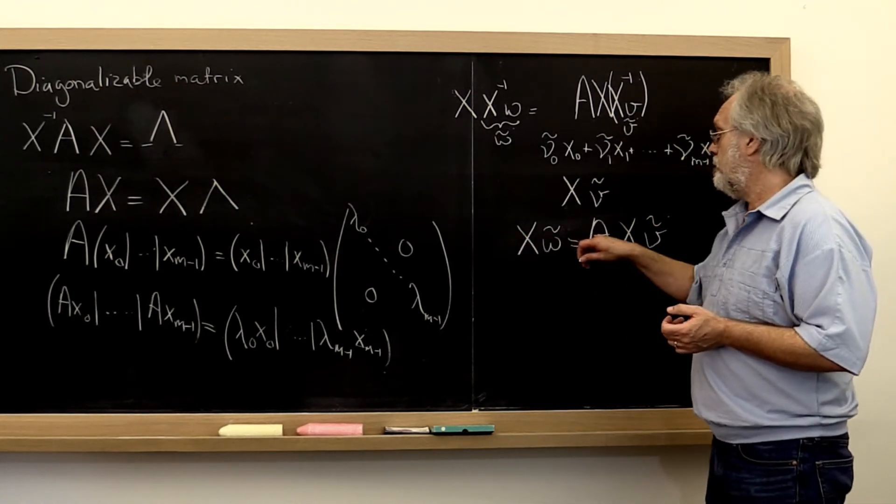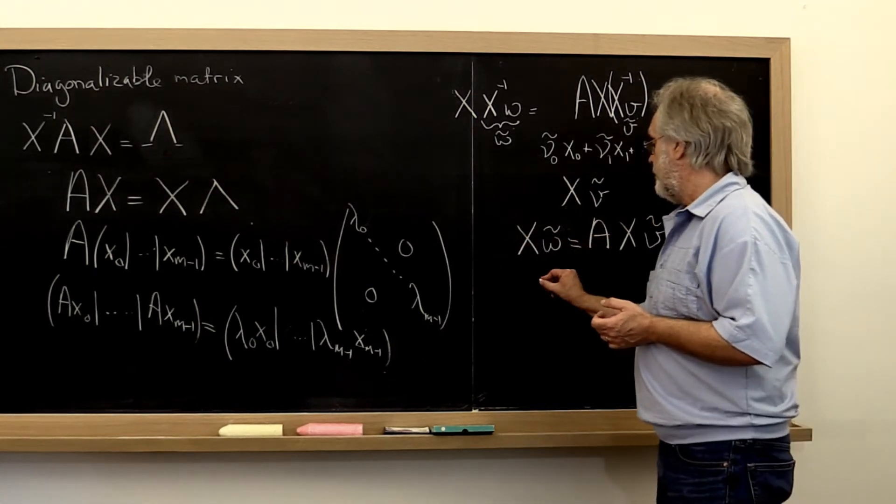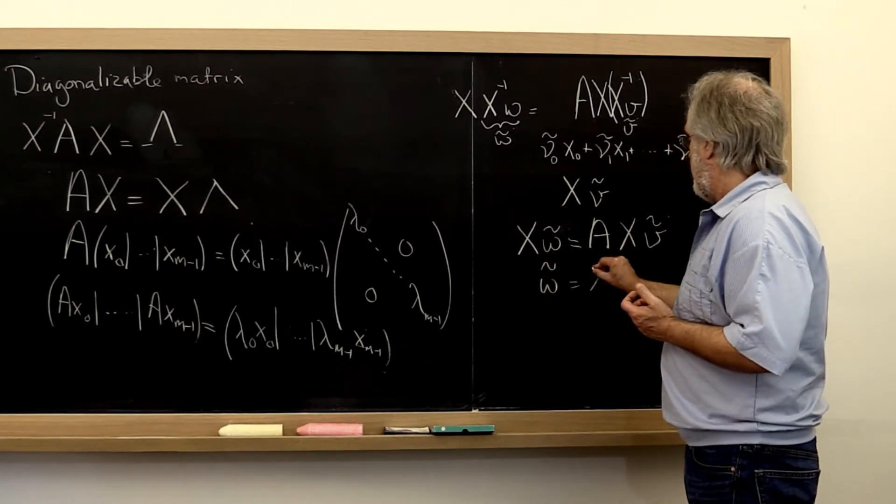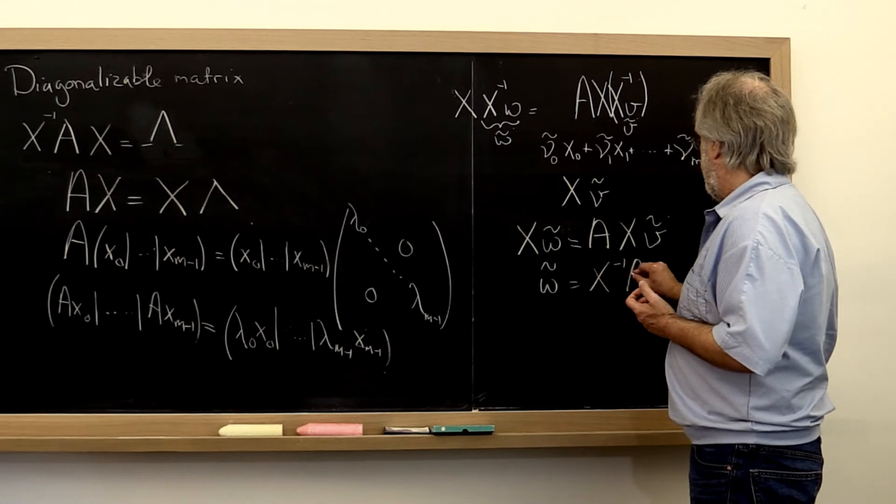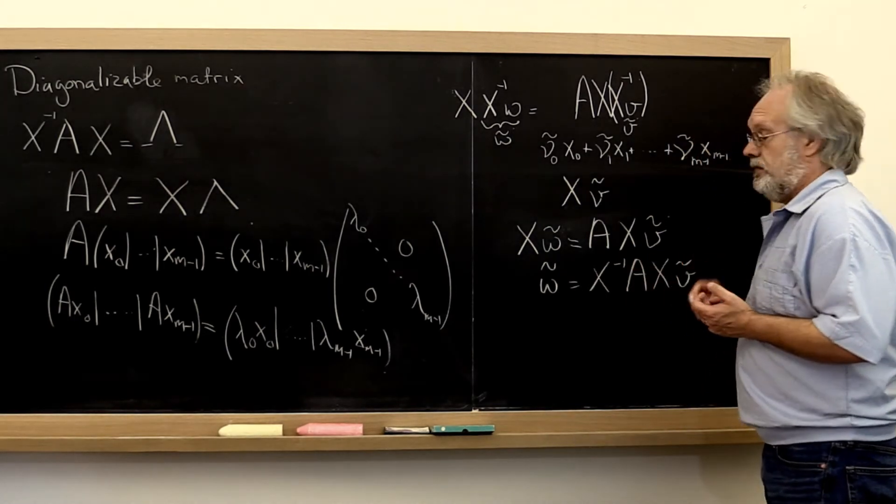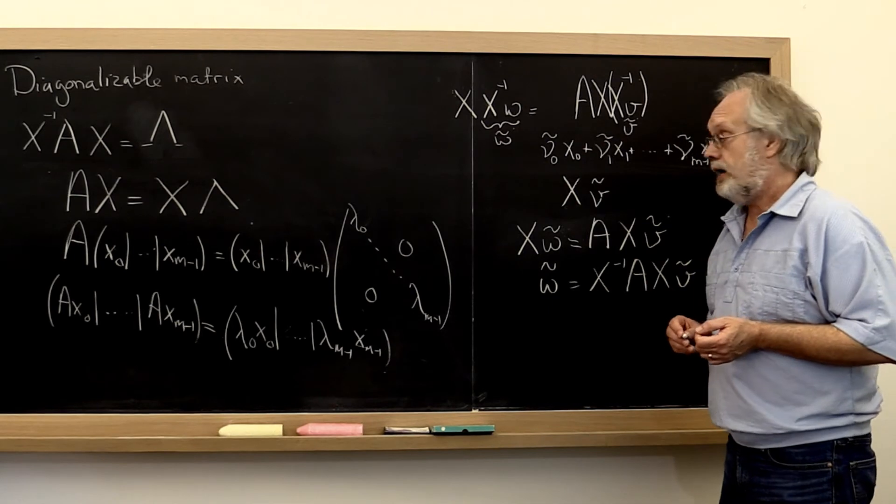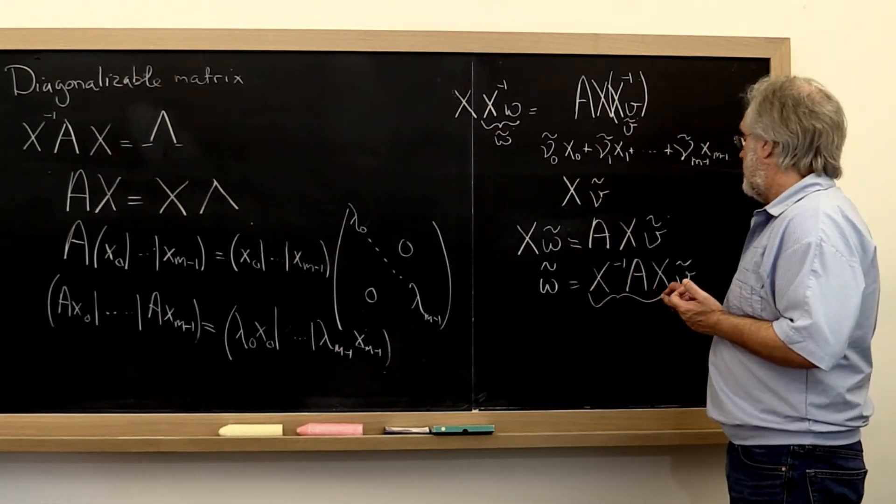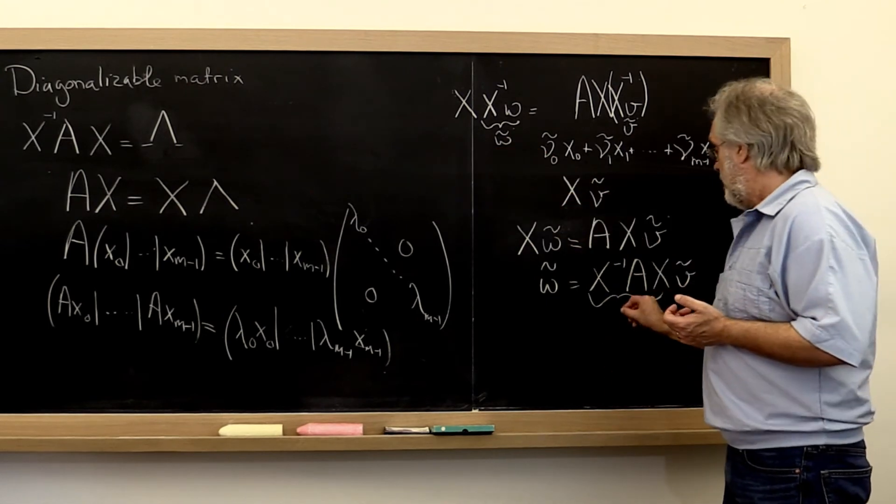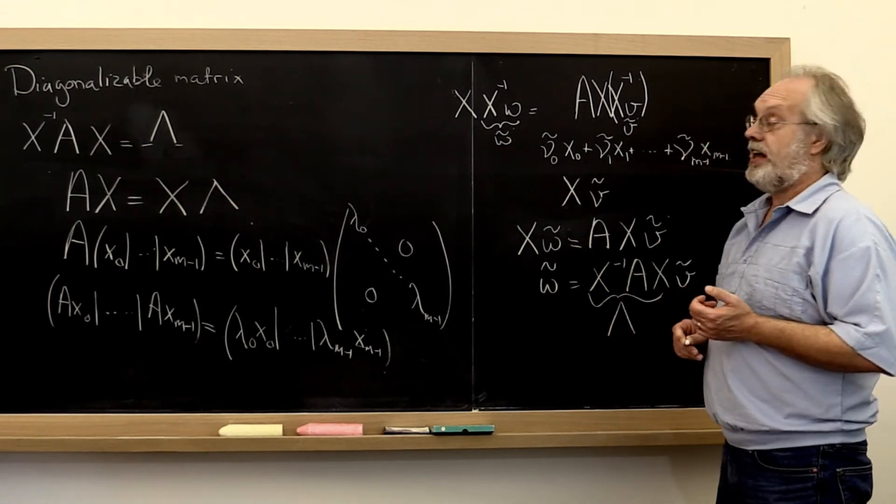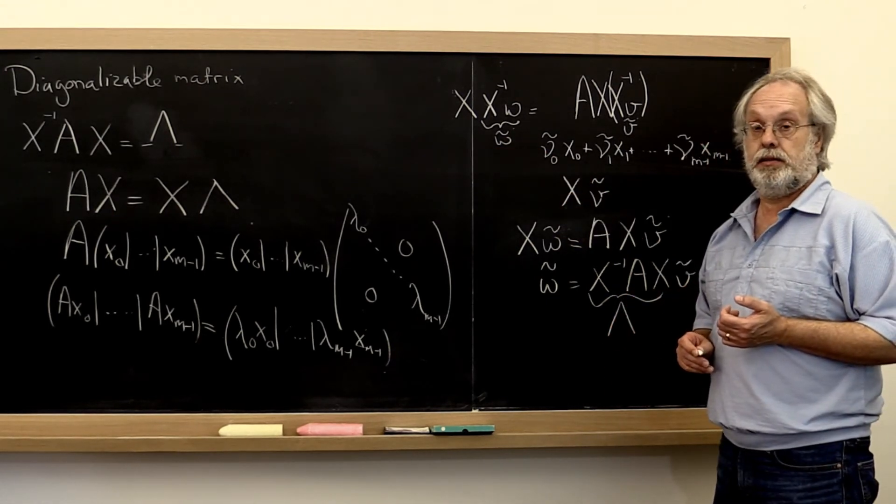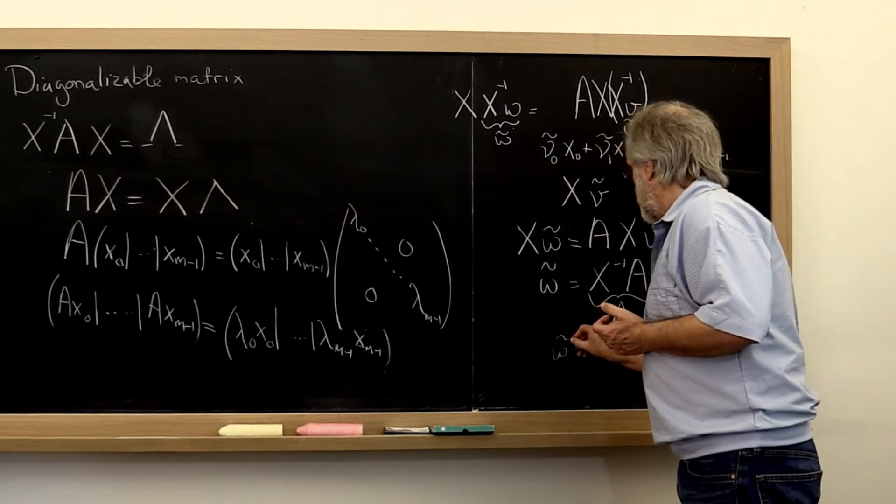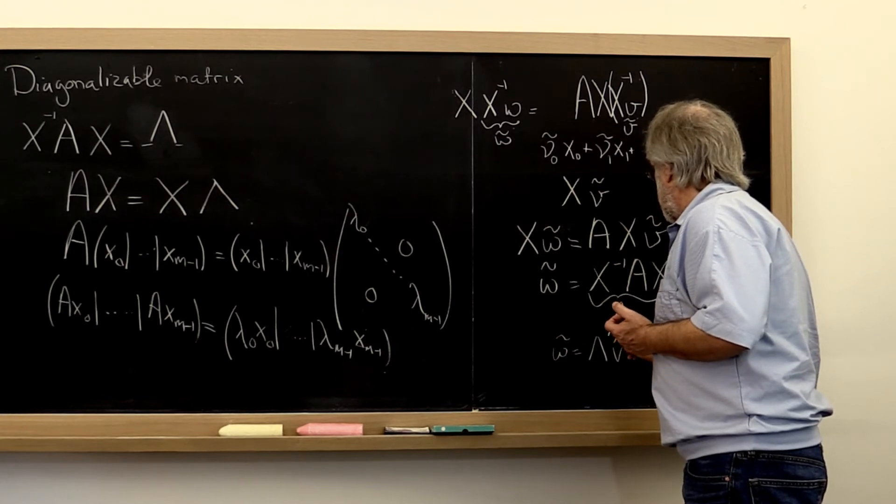Now we can multiply both sides by X inverse and what we get then is that w tilde is equal to X inverse A times X v tilde. But if A is diagonalizable and X is that matrix that diagonalizes, then this here is just our diagonal matrix lambda. And what we notice is that w tilde is equal to lambda times v tilde.